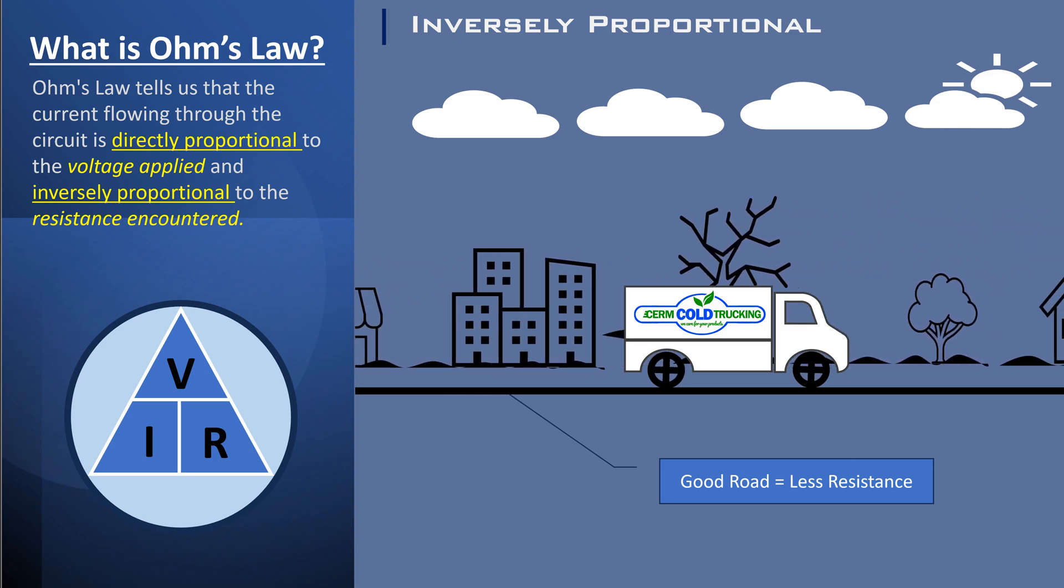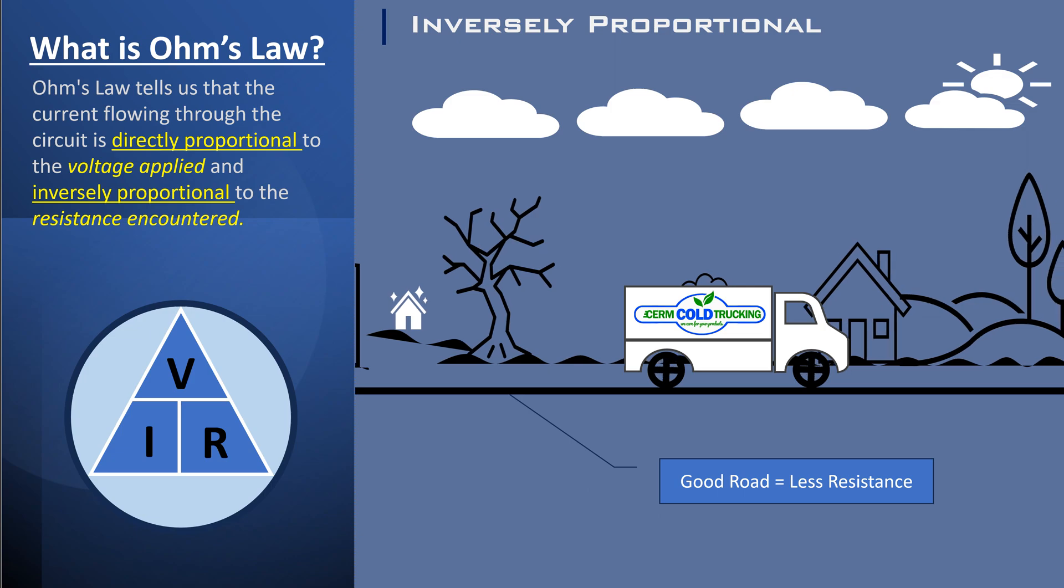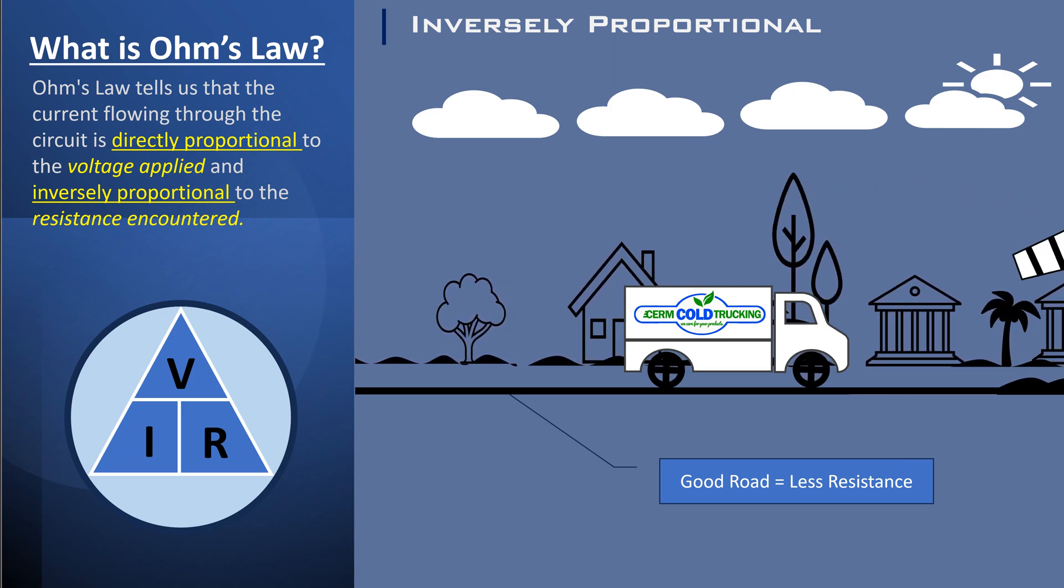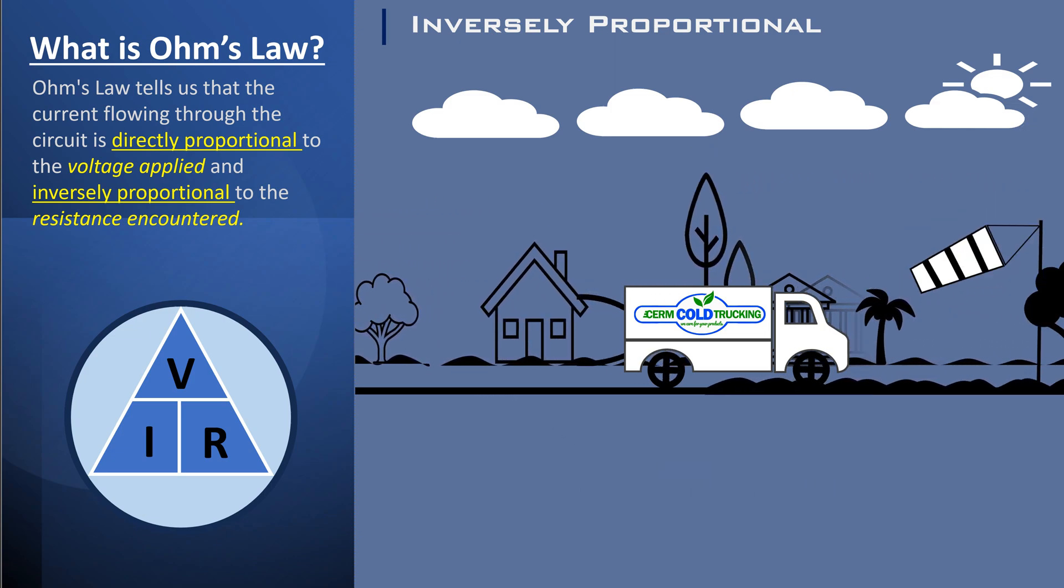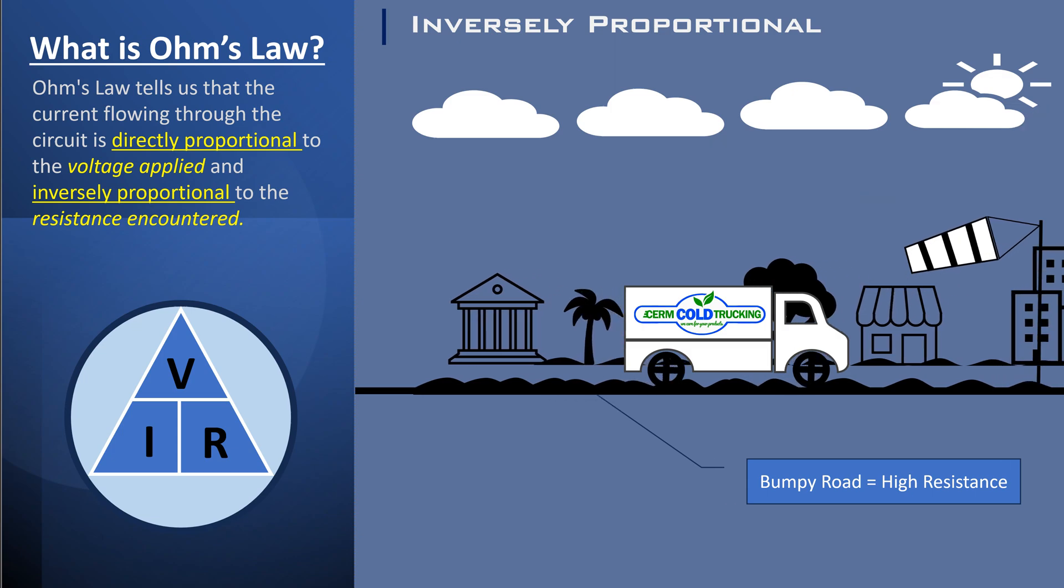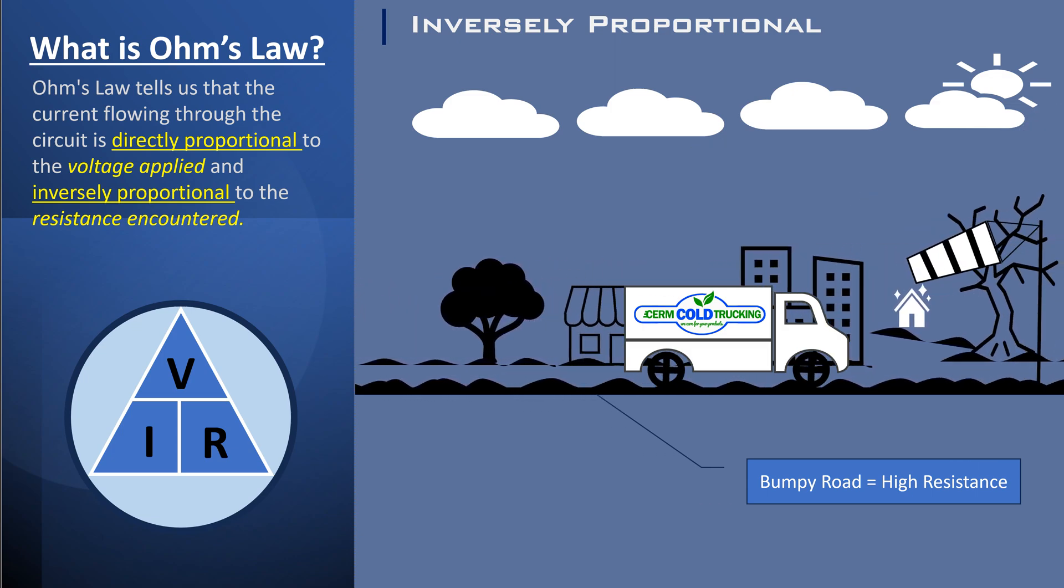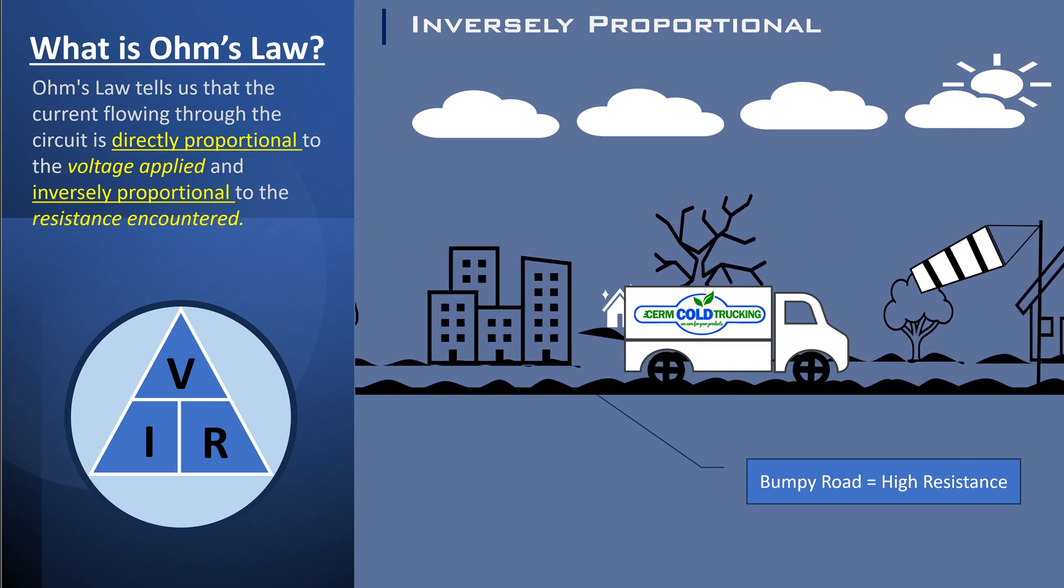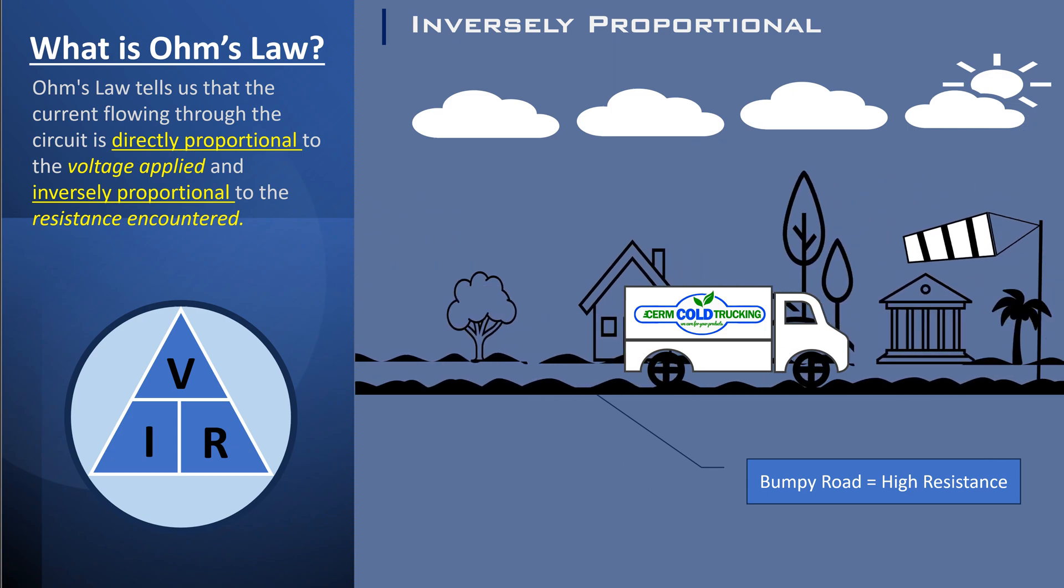allowing it to easily reach high speeds. On the other hand, if you encounter strong headwinds, or drive on a rough and bumpy road surface, the resistance increases. The car will have a harder time maintaining high speeds since it has to overcome the increased resistance.